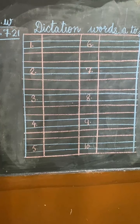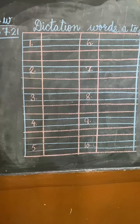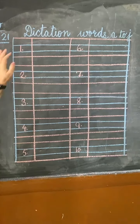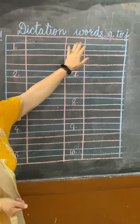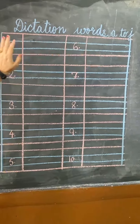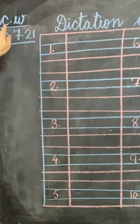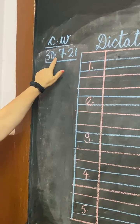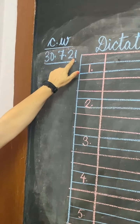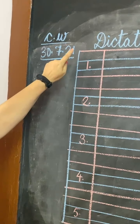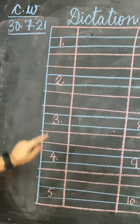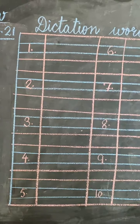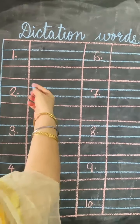Good morning my dear children, hope you all are doing well. Students, today in English written we will do practice of dictation words from A to J. Let us start. First of all write down date C.W., date is 30.7.21. You will write down serial number on the first box. Let us start.